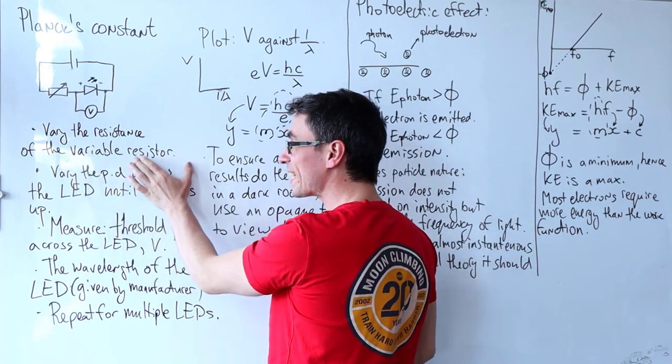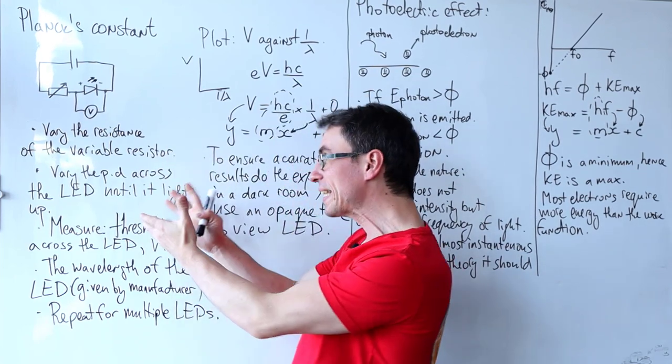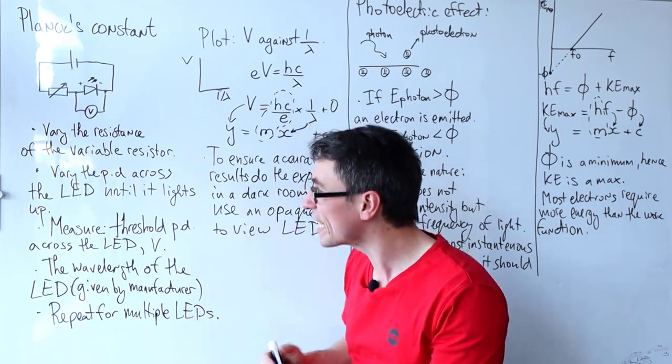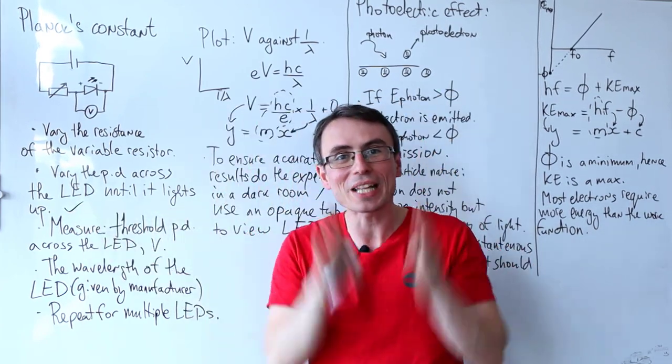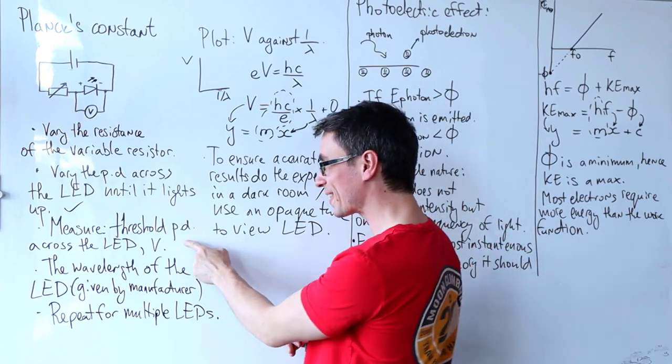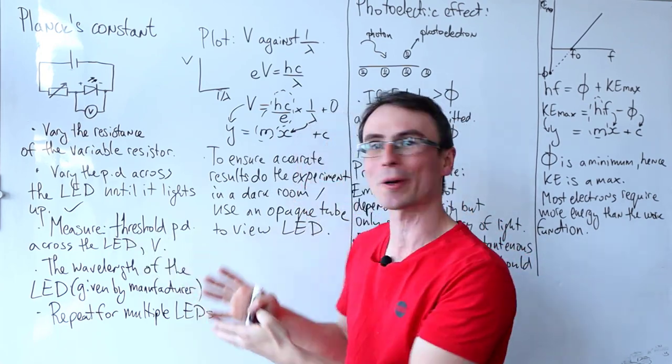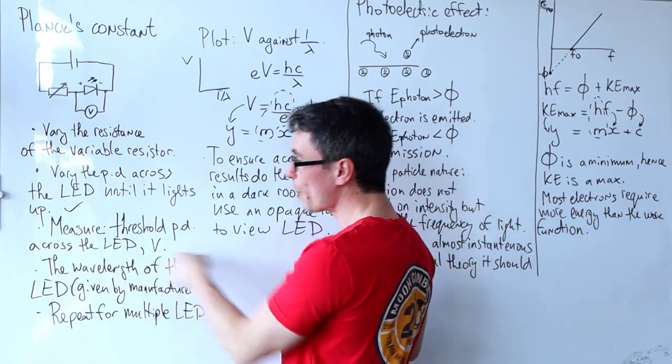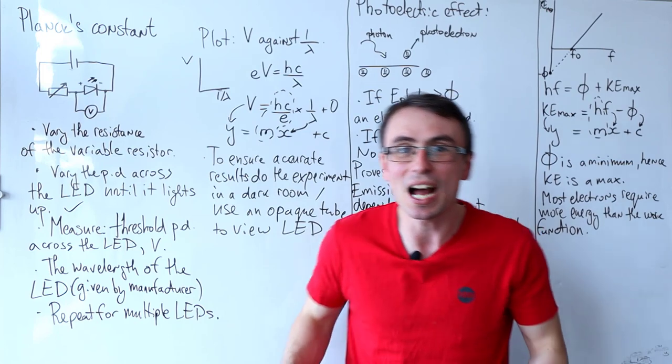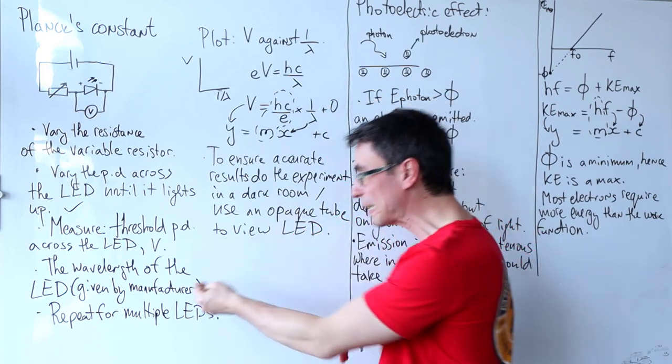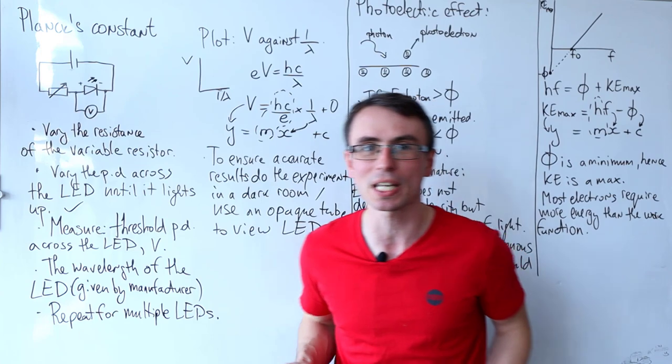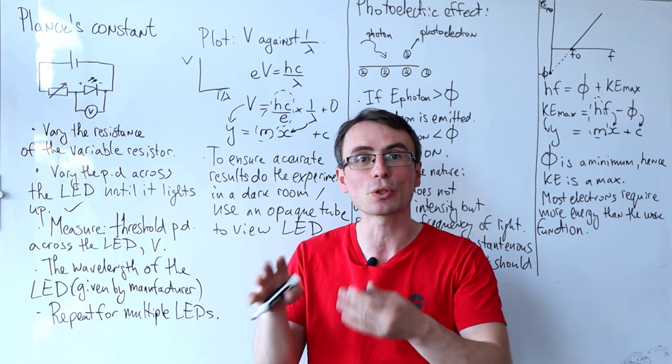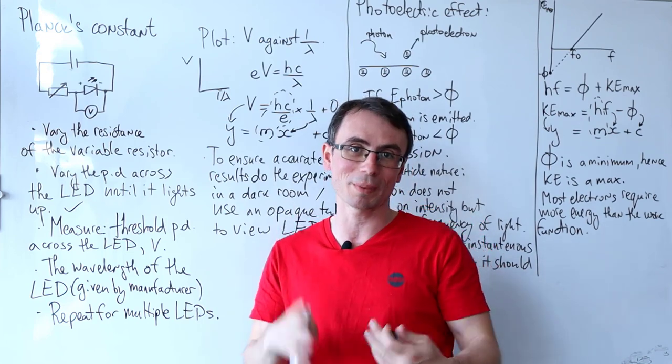We're going to vary the resistance of the variable resistor, and this in turn is going to vary the PD across the LED until it lights up. We're going to measure that precise voltage known as the threshold voltage across the LED just at the moment when it lights up. Another one of our measurements will be the wavelength of the LED. This is typically just given by the manufacturer and accepted by mark schemes. However, an additional way is to use the standard diffraction grating method to determine the wavelength.